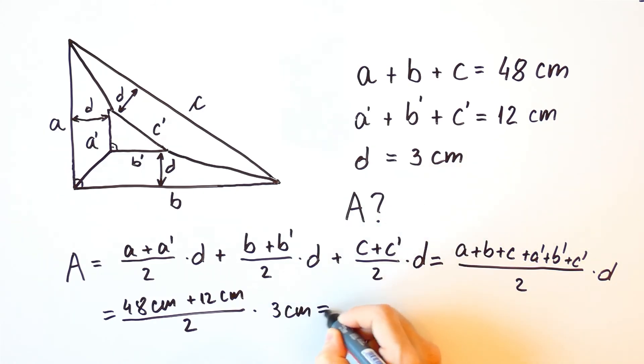So, this is equal to 60 centimeters over 2 times 3 centimeters which is equal to 30 centimeters times 3 centimeters. And that is equal to 90 centimeters squared.